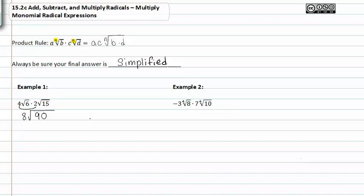Now I have to make sure that my final answer is simplified. I do this by checking ninety to make sure I've found all the prime factors. So I'm going to prime factor ninety.